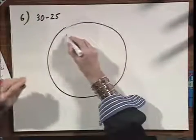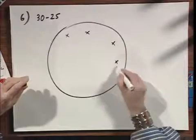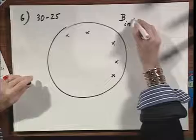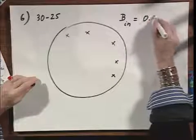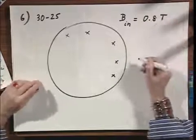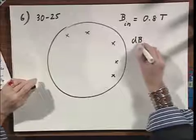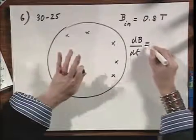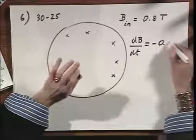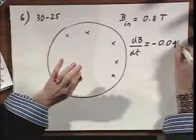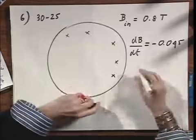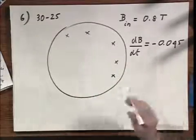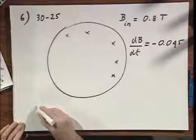We have an area with a magnetic field pointing into the blackboard. The initial field is 0.8 tesla. We have a dB/dt — the magnetic field is gradually becoming smaller and smaller, weaker and weaker. That's why we have the minus sign of 0.045 tesla per second. The field is decaying, so to speak.